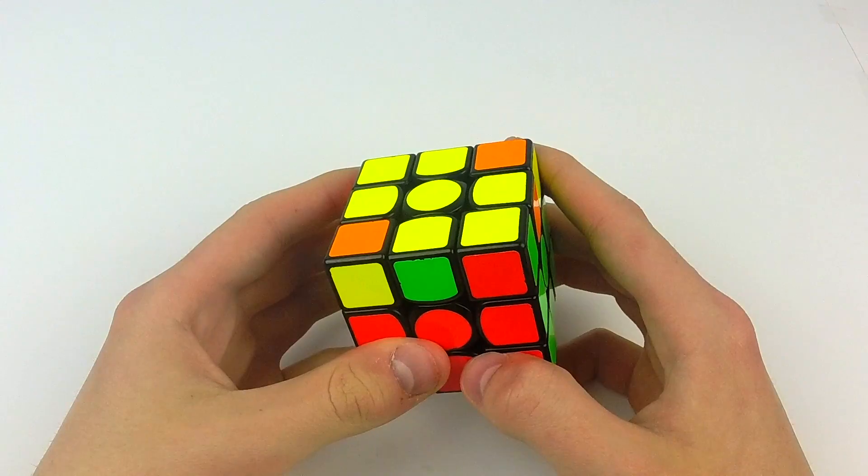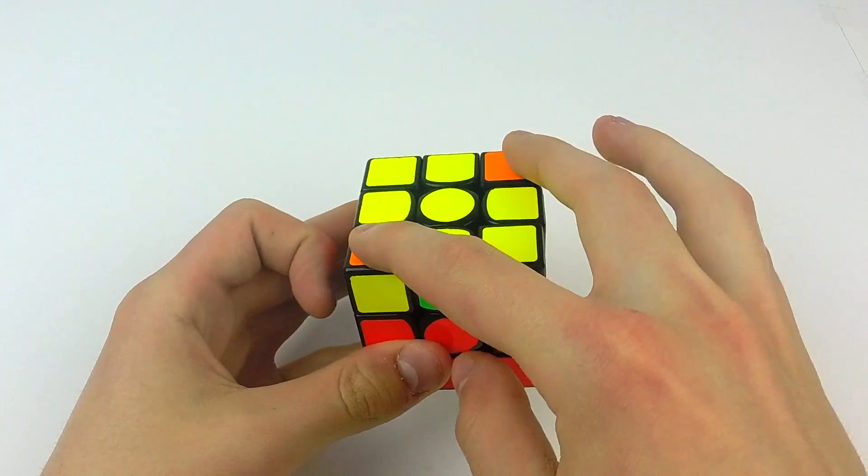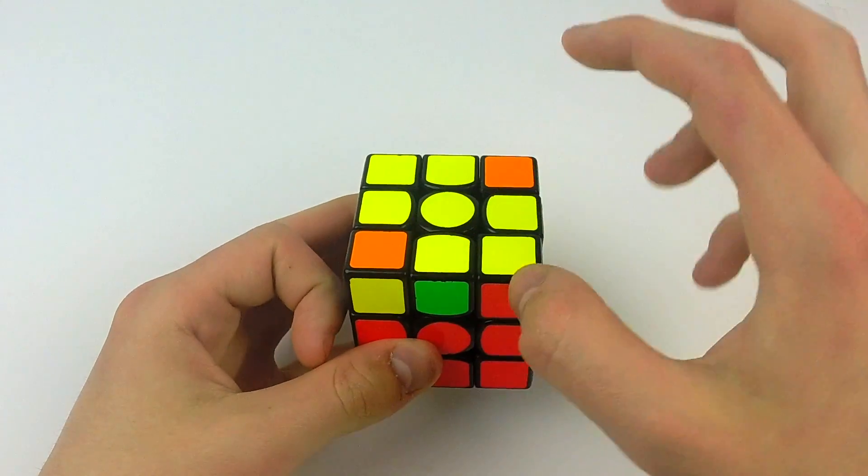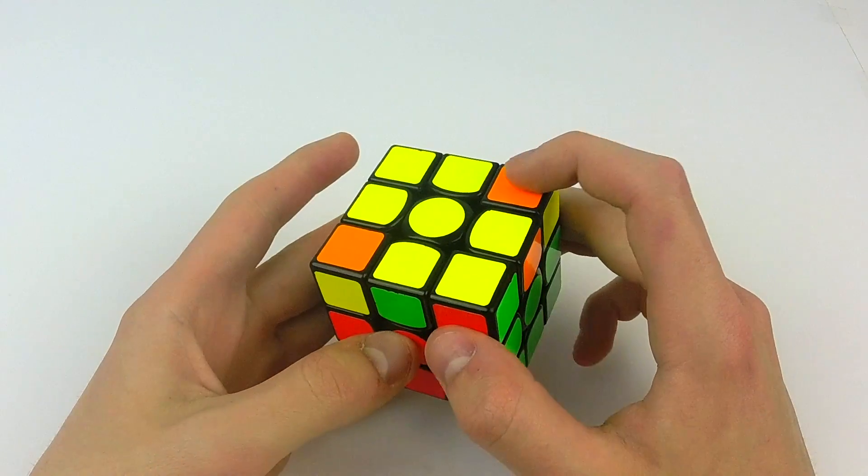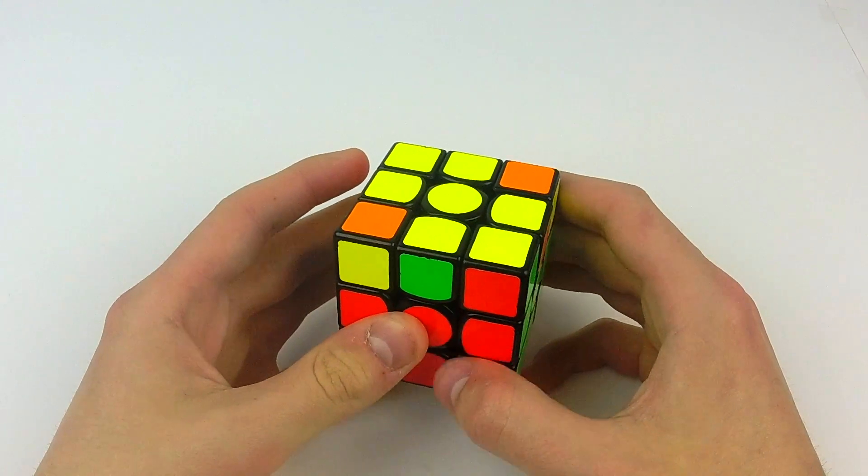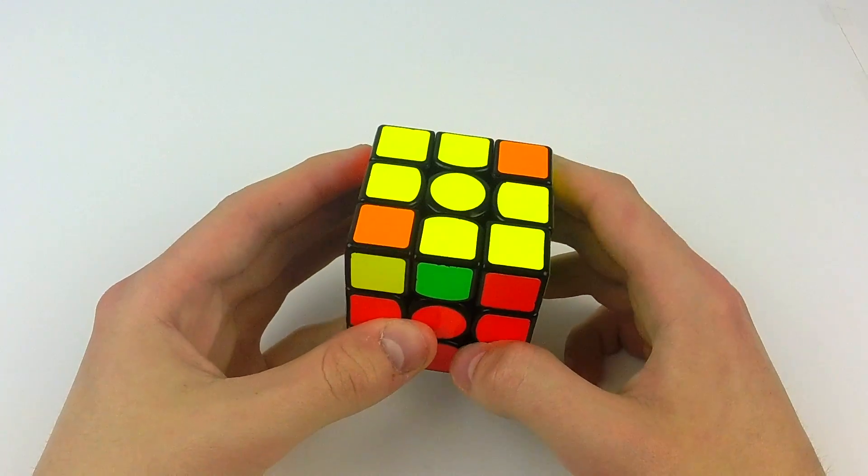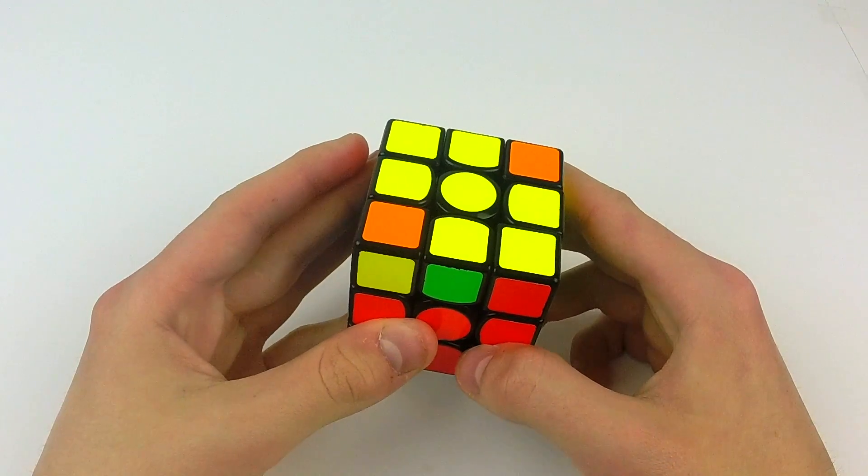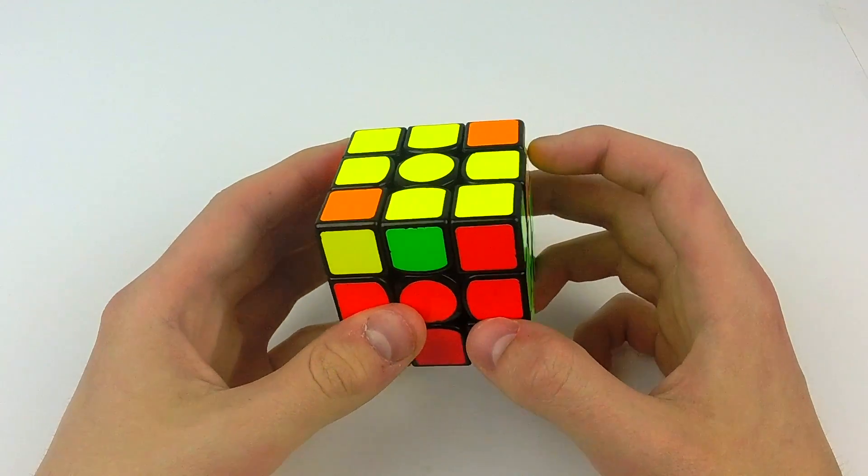So the way you recognize this one is because your two stickers on top are matching colors and the stickers right here are opposite colors. When you see both of those things then you know that you have this COLL and the alg for this goes like this.